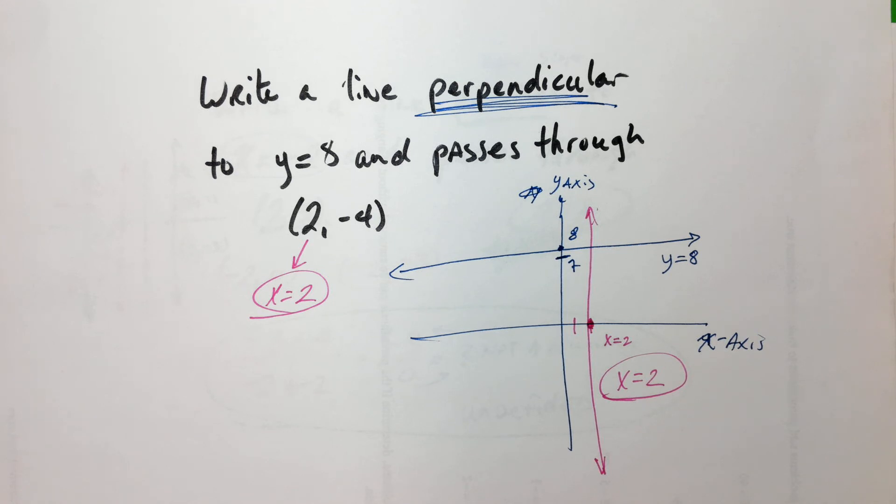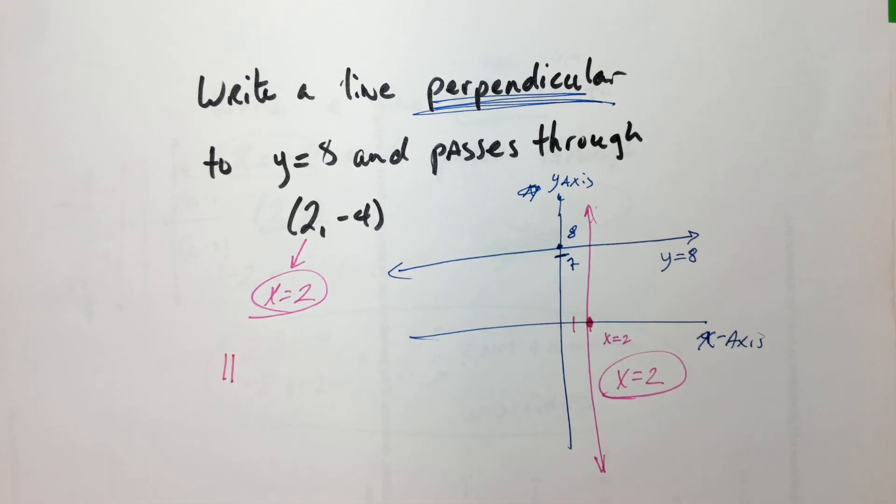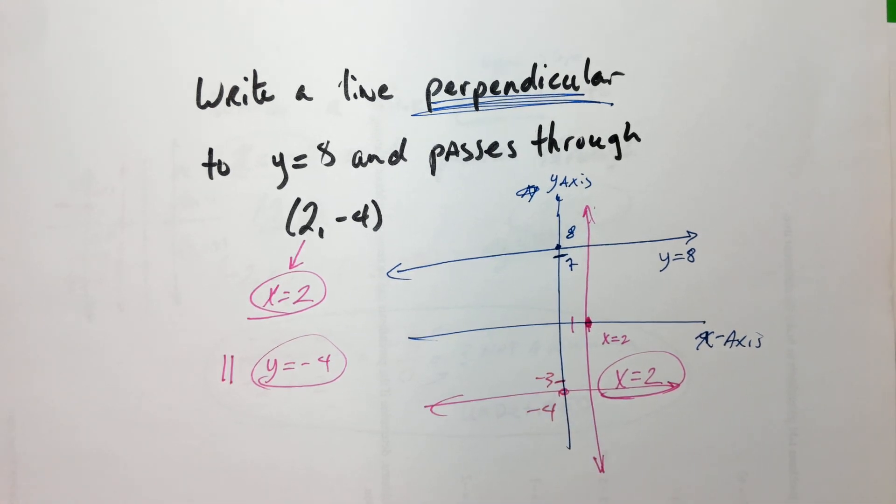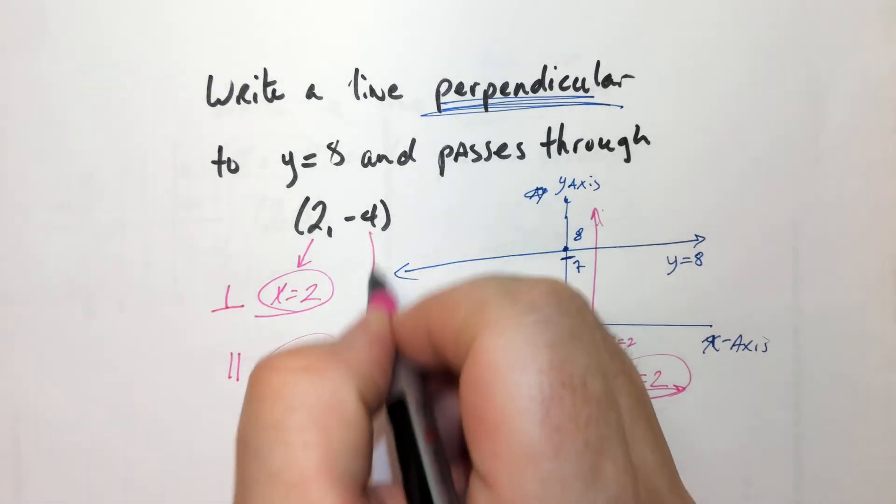So if it was parallel, then Y equals negative 4? Yes. Exactly. So if it was parallel, this means parallel, right? Yeah. Parallel would be Y equals negative 4. And that would be all the way down here. That's obviously negative 3. This is negative 4. So this is perpendicular, and that's parallel.